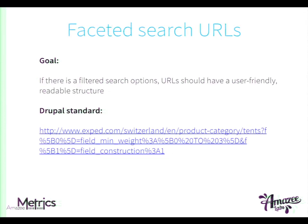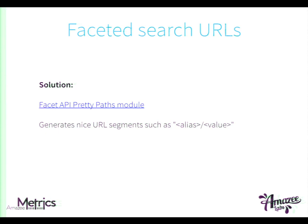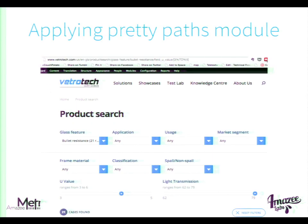Another URL topic arises when you use Facet API and filtered searches. By default, your Drupal URLs will have a lot of percentage signs and encoded characters — they're really long and not very readable. You would like to have readable, user-friendly URLs there as well. In this case, you use the Facet API Pretty Path module, which chains facet values into nice URLs such as alias/value format. In the example you can see really nice, readable content in the URL — much better than the many percentage signs.